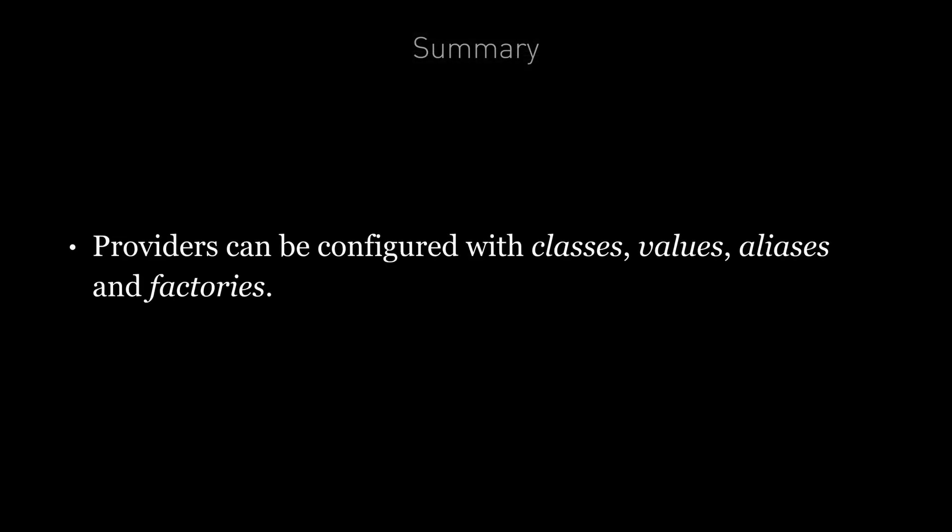To summarize, we can configure providers to return four different kinds of dependencies: classes, values, aliases, and through factory functions. In the next lecture, we're going to look at the different ways we can define tokens in the dependency injection framework.